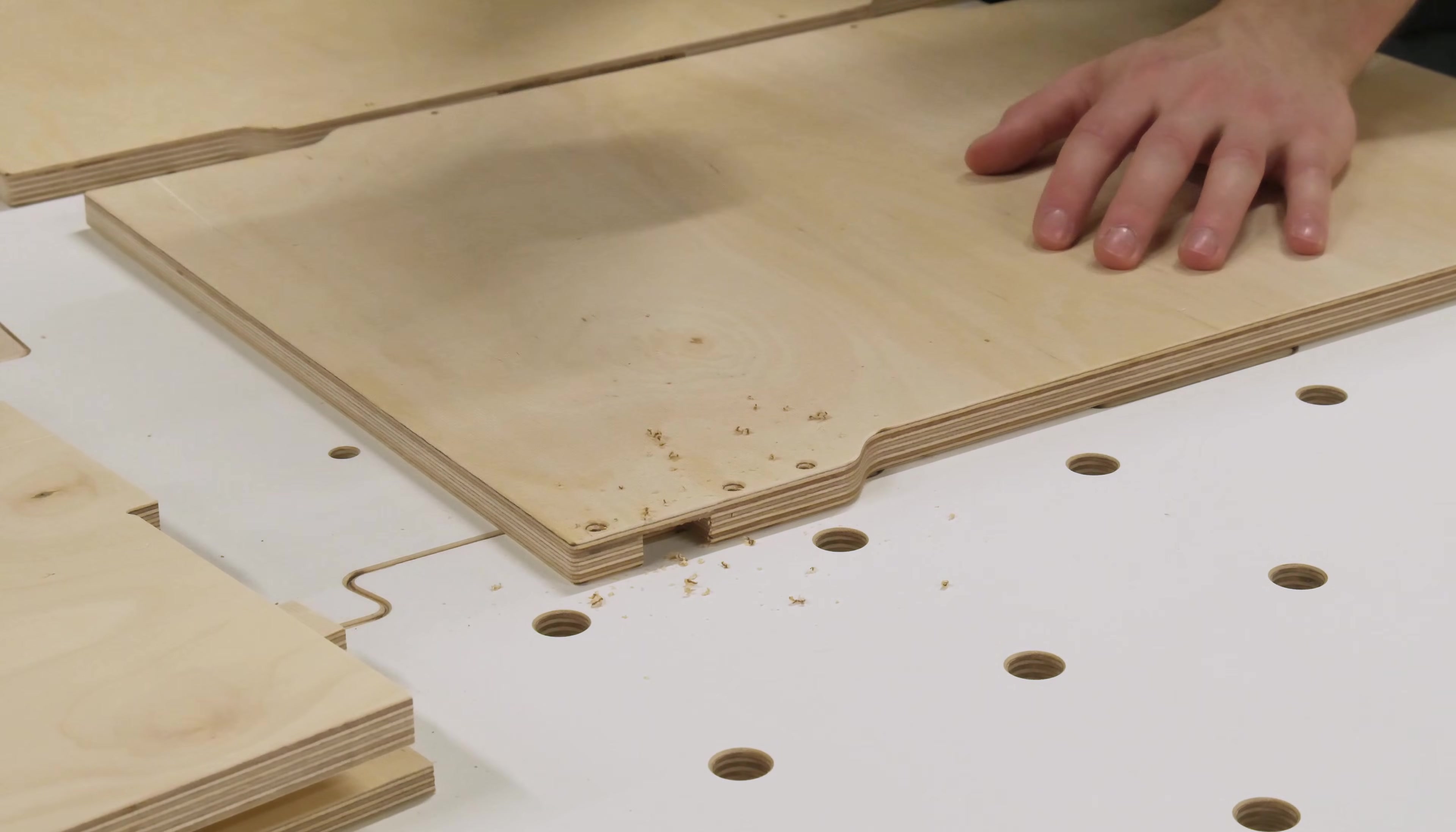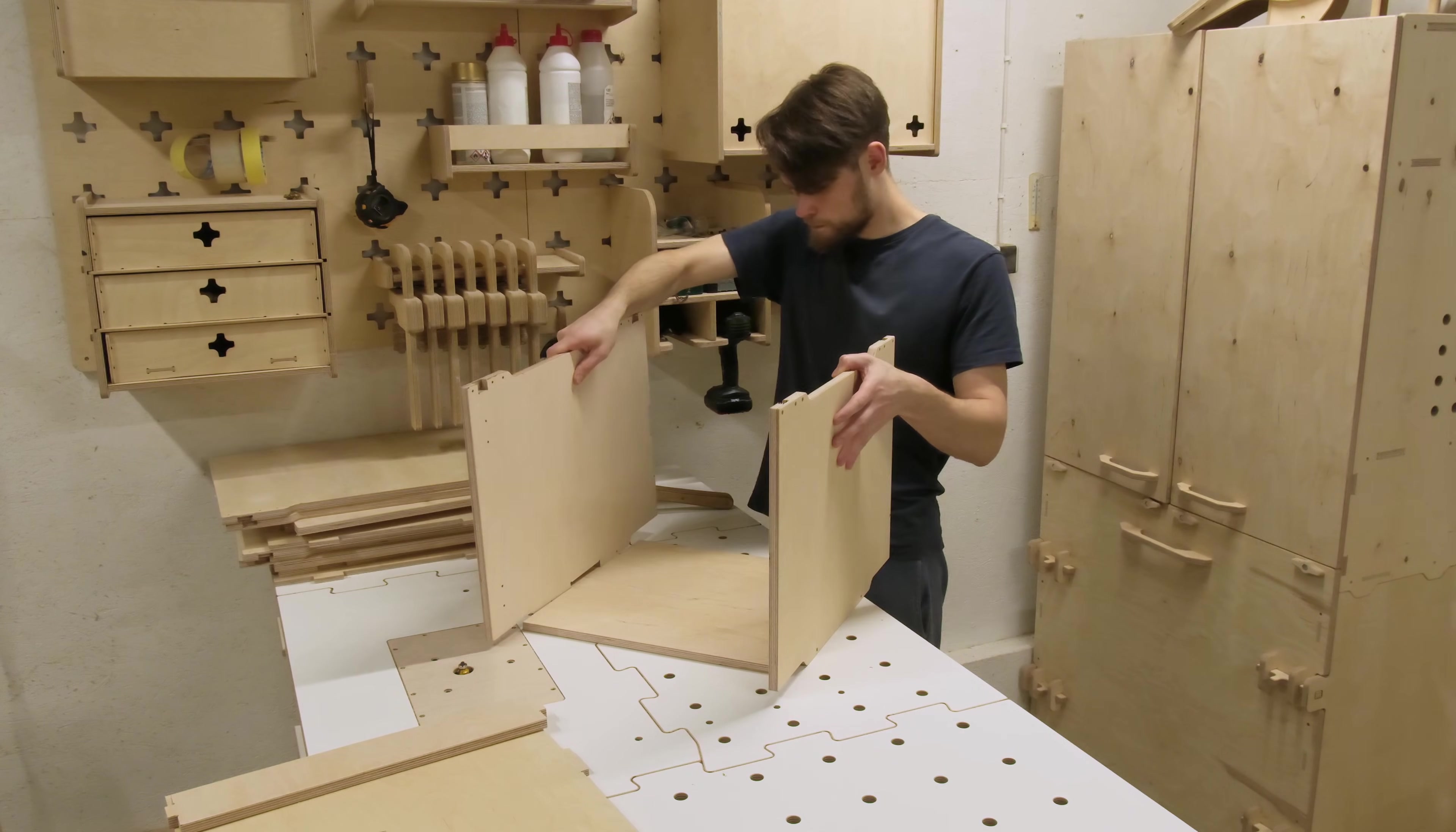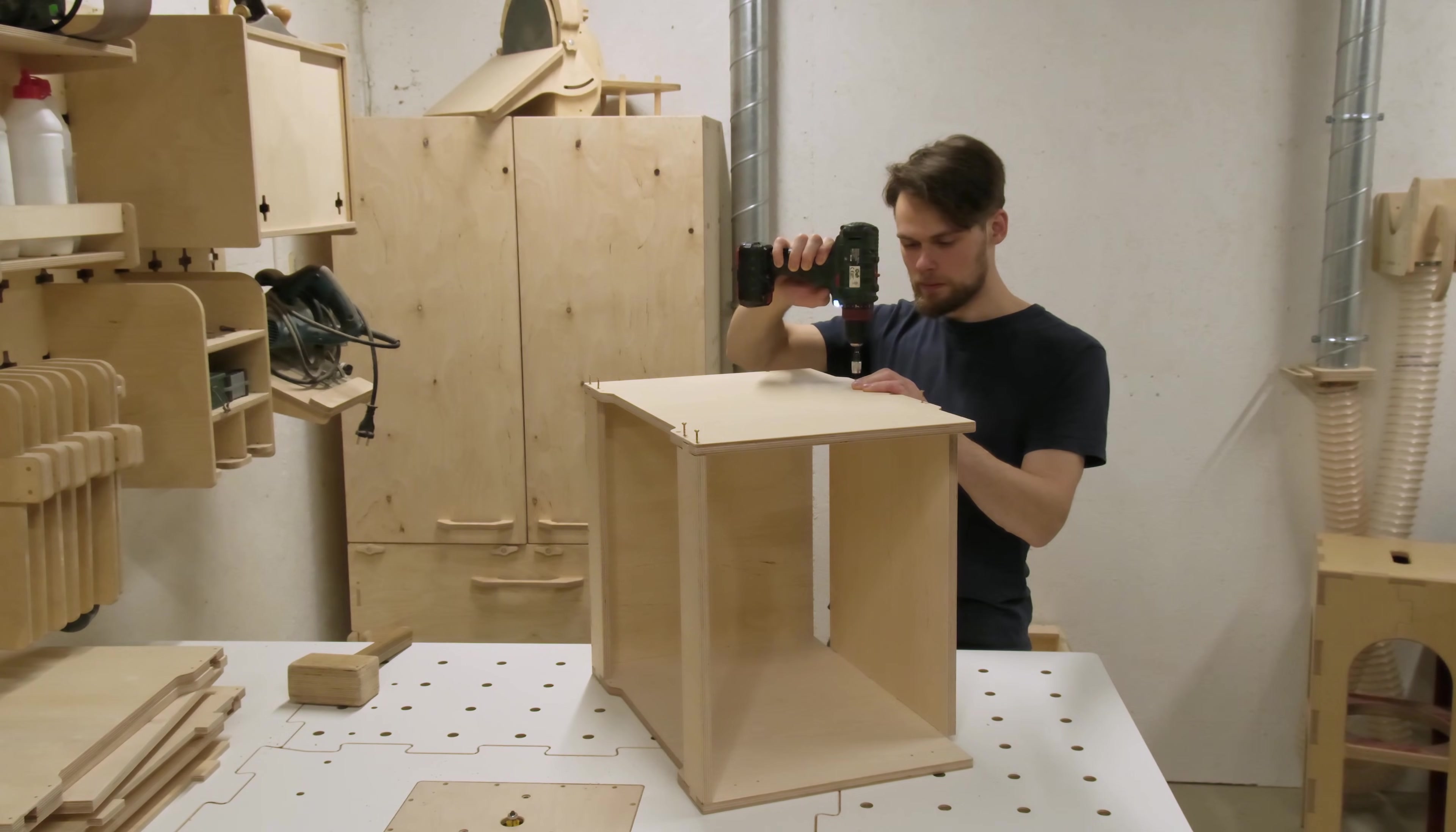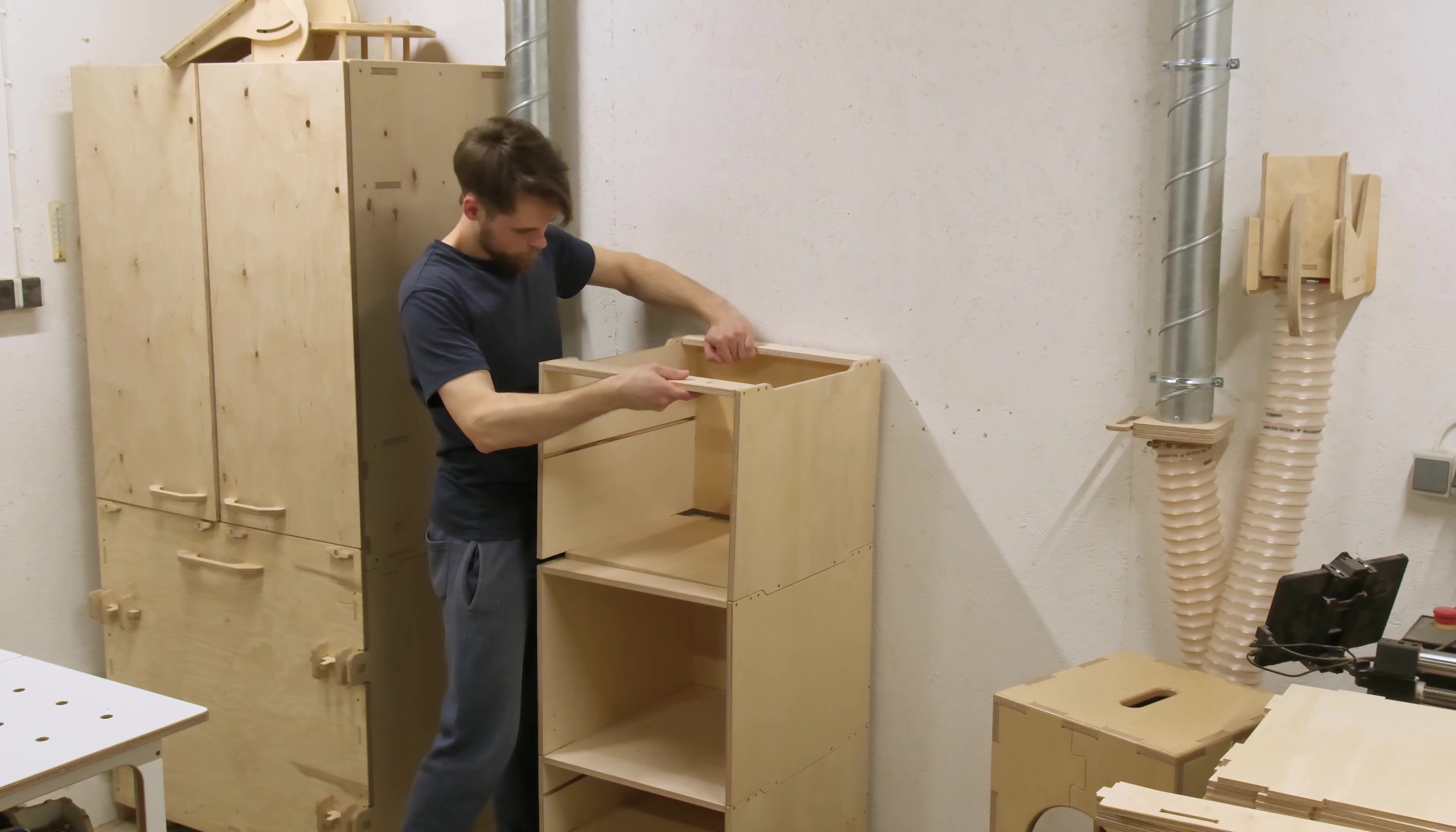The double module follows the same assembly steps. Frankly, the only difference is the size of the side and back components. The joinery and the floor component sizes are the same. This allows us to create many different cabinet configurations or even stack them higher than you normally would. Complete creative freedom.